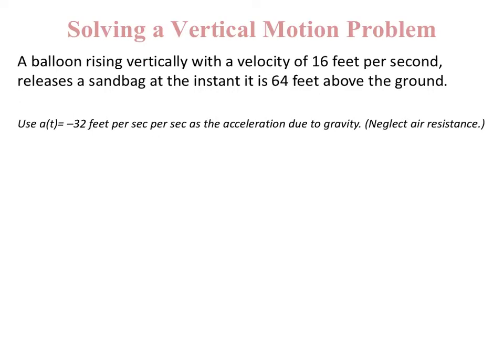We're going to be answering some questions about this function, but first let's find the velocity function and the position function. So A(t) equals negative 32 feet per second per second, and we are going to integrate this function with respect to time to find the velocity function. So the velocity function is going to be negative 32t plus our constant of integration.